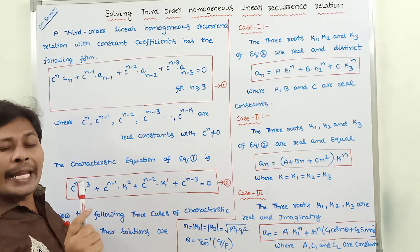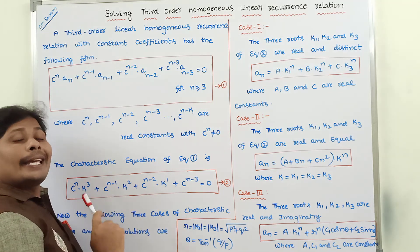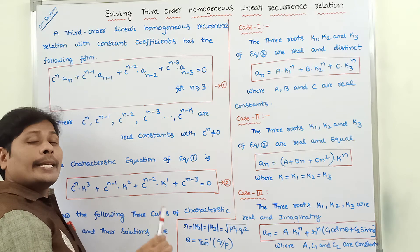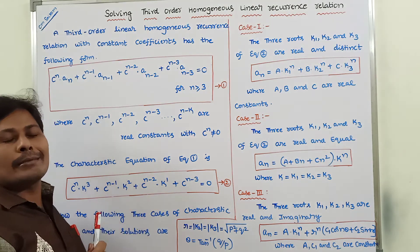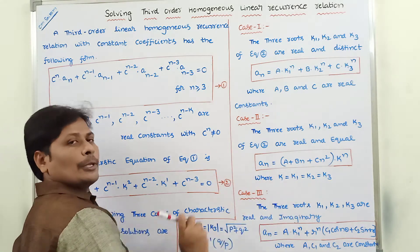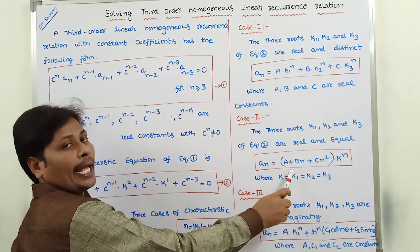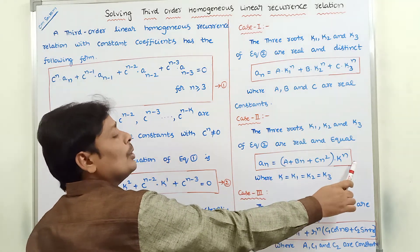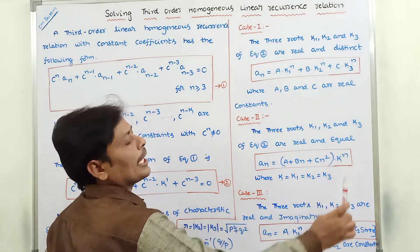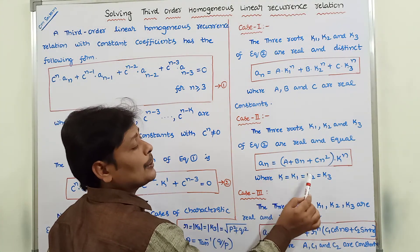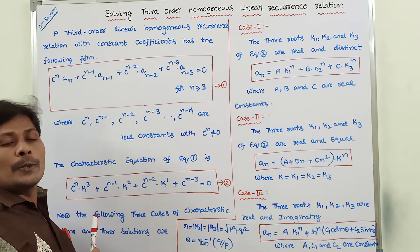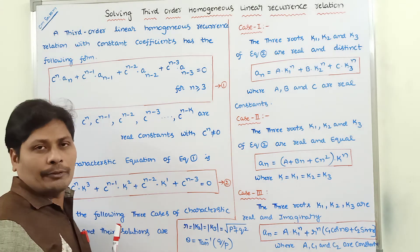Case 2: The 3 roots of the characteristic equation are real and equal, meaning k equals k1 equals k2 equals k3. Then the general solution is: a_n equals (a plus b*n plus c*n^2) times k^n, where k equals k1 equals k2 equals k3 and a, b, c are real constants. This case is used whenever the 3 roots k1, k2, k3 are real and equal.